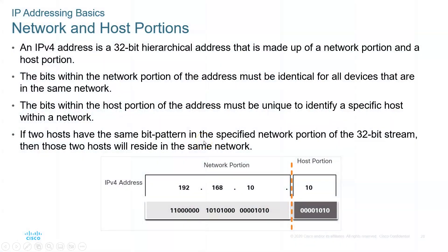When we're talking about IPv4, an IPv4 address is made up of 32 bits and it's typically written in decimal format. So when you have 192.168.10.10, each of those decimal numbers separated by a dot is 8 bits. When you convert the decimal to binary, you get 8 bits for each segment.